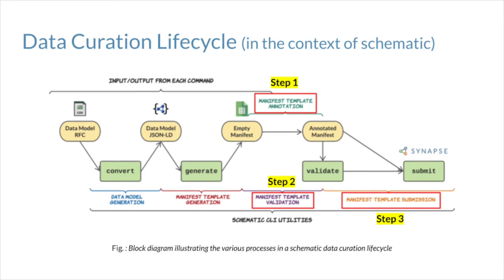Step two is to validate the metadata to ensure that they haven't missed any critically useful information that is necessary to correctly interpret the dataset. Finally, step three is to correctly associate this metadata file with the dataset containing the information described in the metadata file.